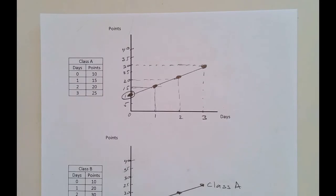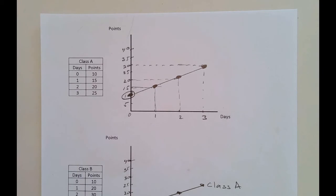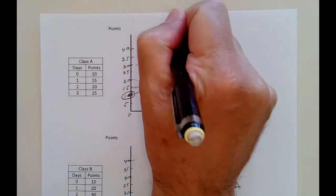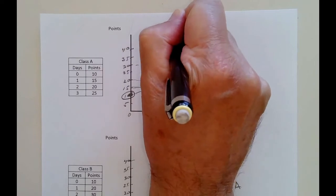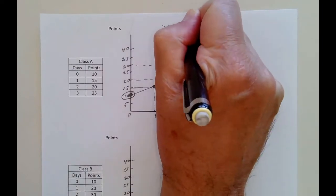Back again — we stopped here with class A. We were talking about how to do graphs and linear functions. This is the second lecture for chapter 1, the appendix, the math review. We're talking about graphing here, and we talked about the equation of a line, which is y equals mx plus b.